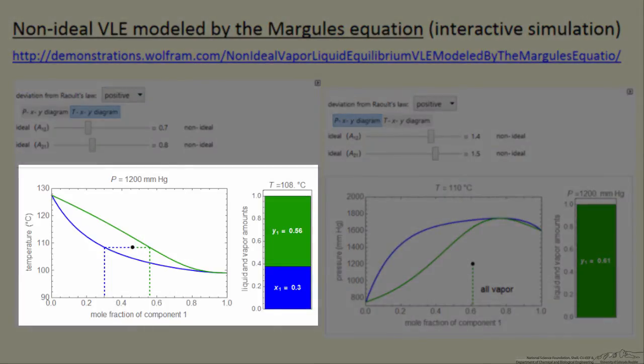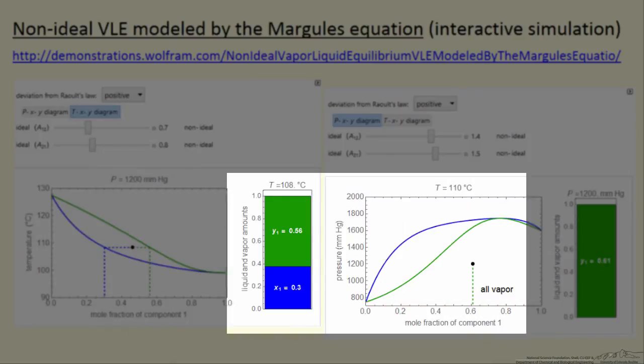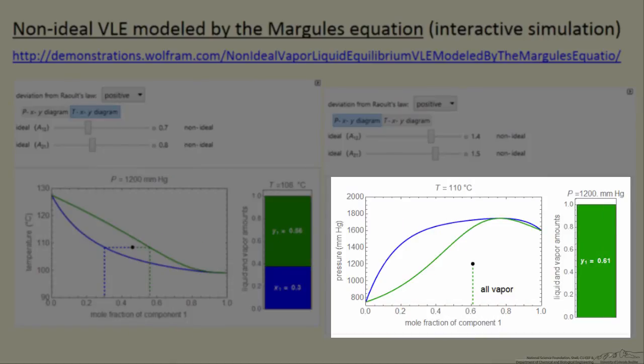When I pick the point here, there's two phases present. When I move the black dot here, it's all vapor, and that's reflected in the bar graph.